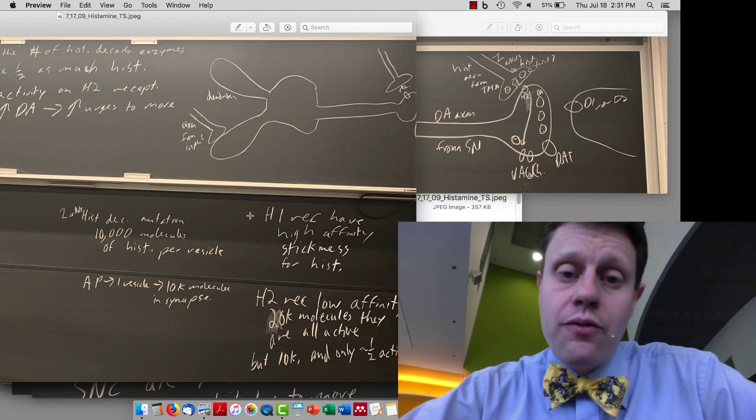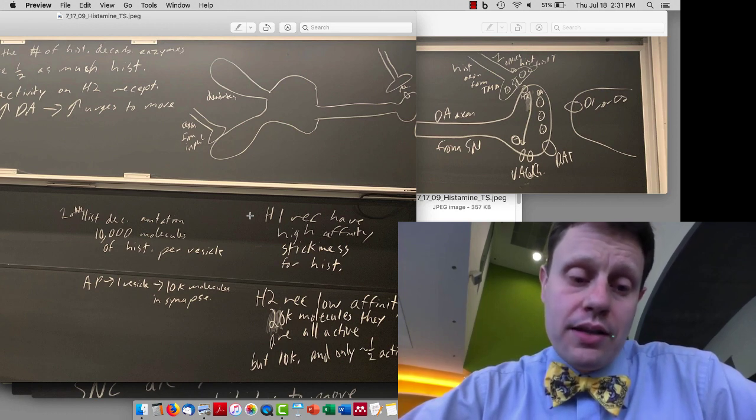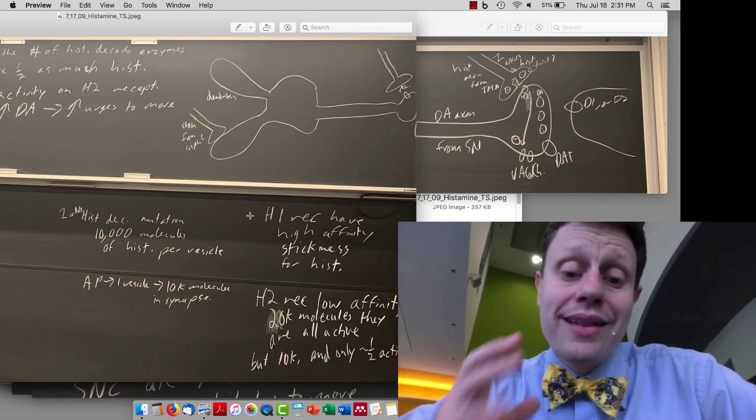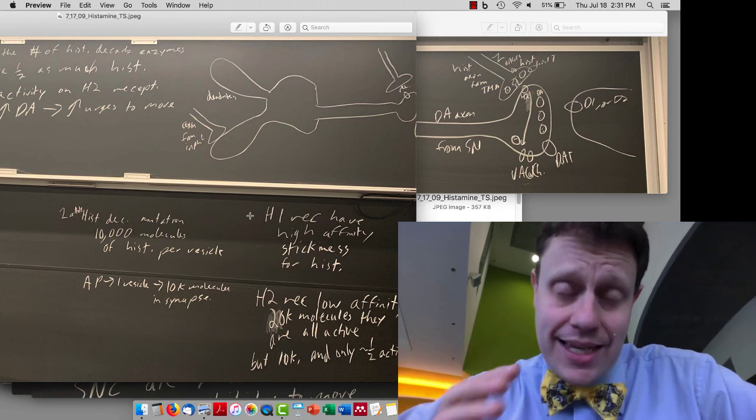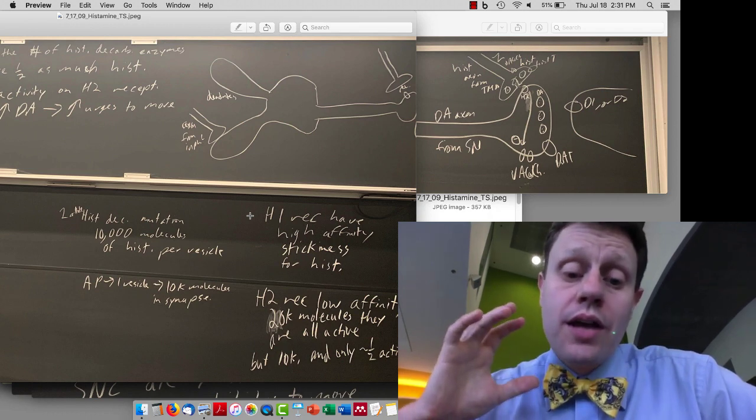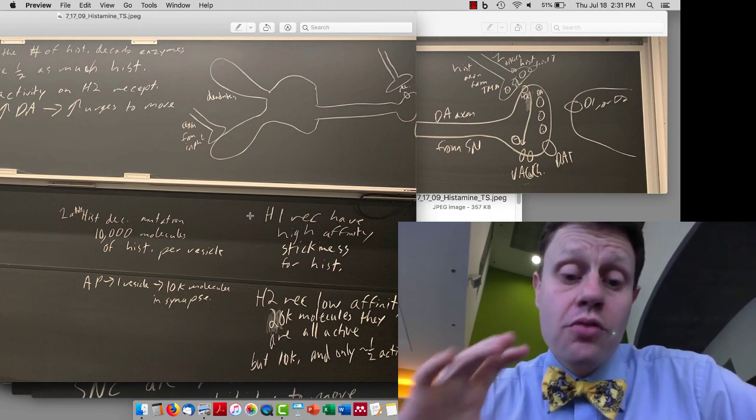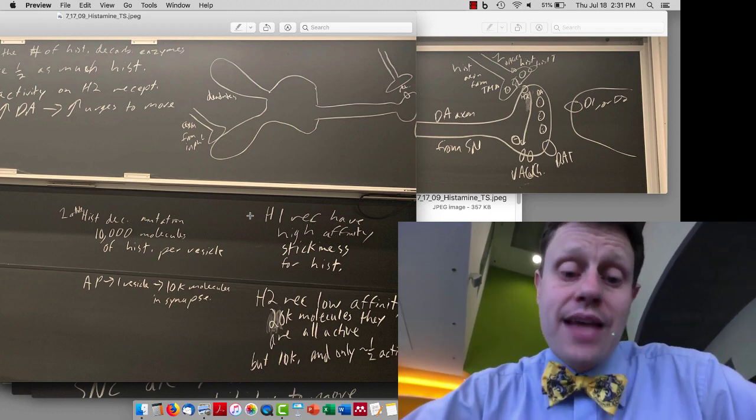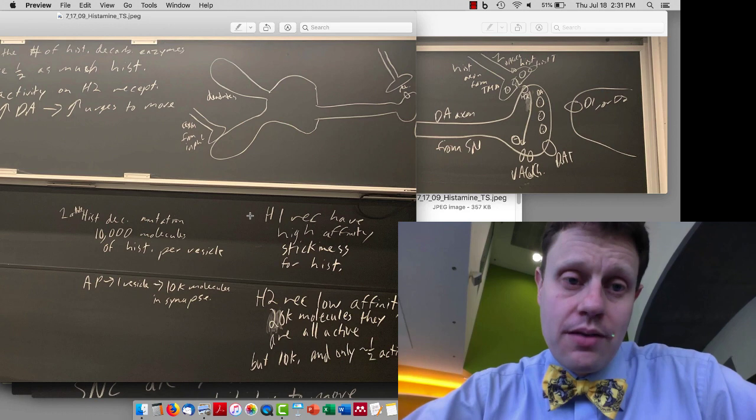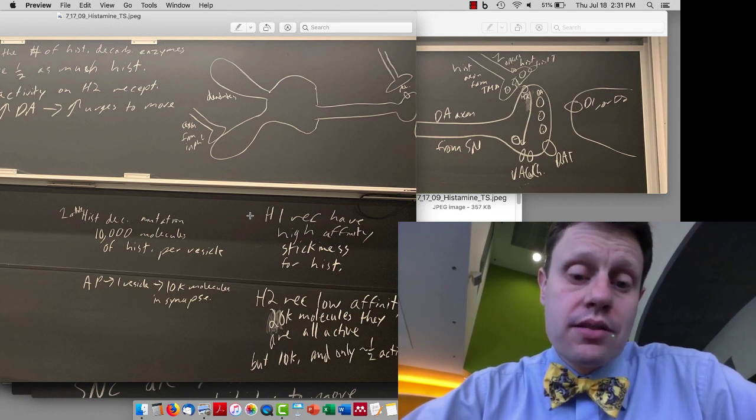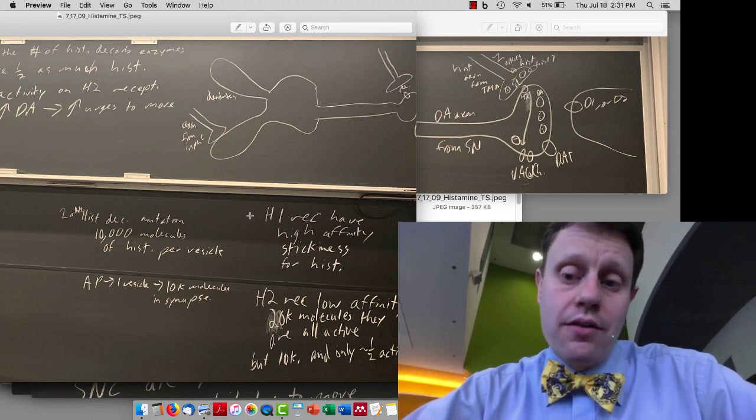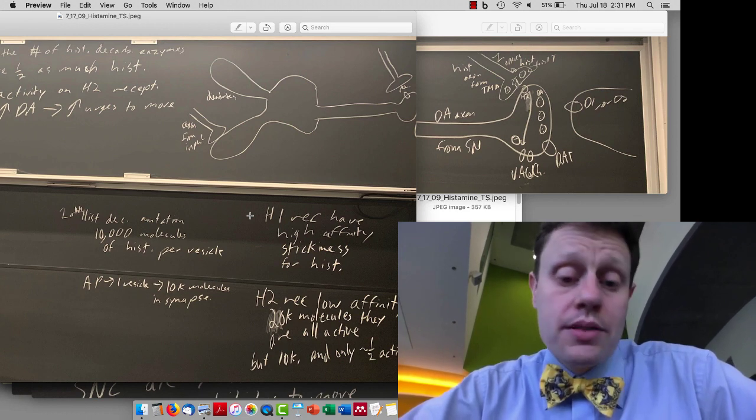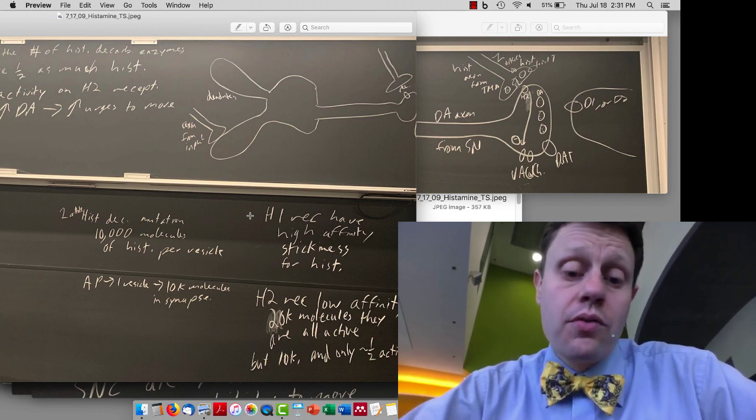But if we decrease the amount of histamine being released, then the H2 receptors are less active and less sticky. And so as a result, if you cut in half the amount of histamine released, those receptors do notice that decrease and now are less activated by the decreased histamine because 10,000 molecules is not enough to completely saturate them. 20,000 molecules is, but 10,000 molecules isn't. And so if you decrease the amount of histamine produced, those H2 receptors notice that decrease.